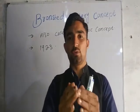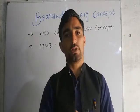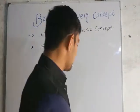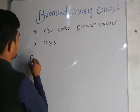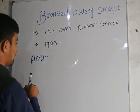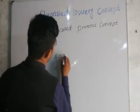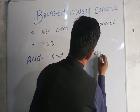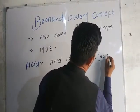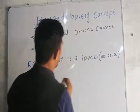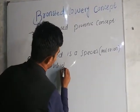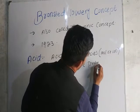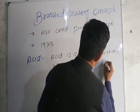The Brønsted concept defines an acid as a species. Acid is a species — it donates a proton, which is called a proton, which means hydrogen ion.